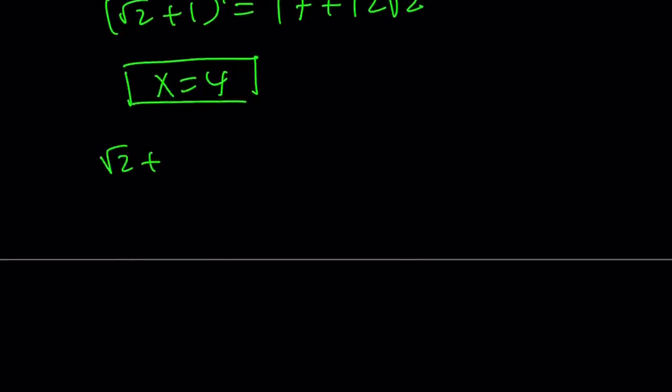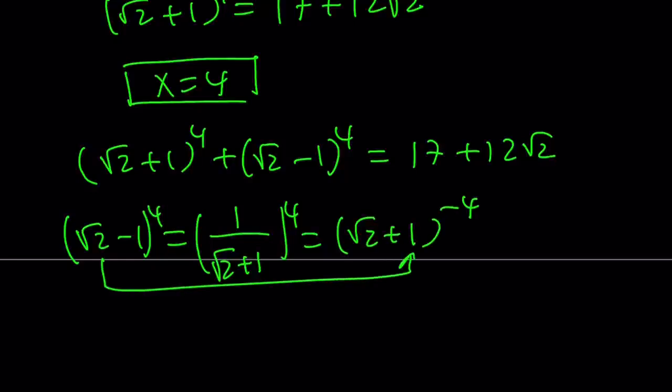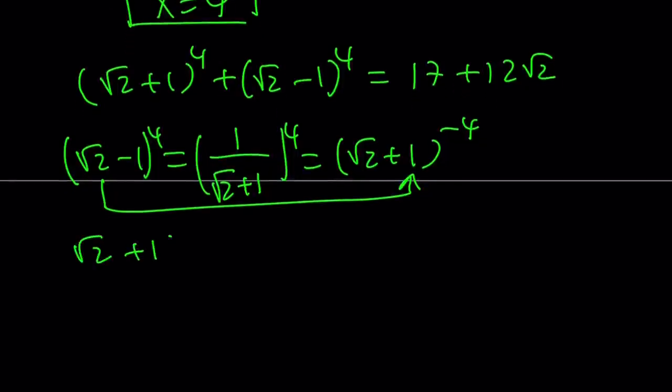And this implies square root of 2 plus 1 to the fourth power plus square root of 2 minus 1 to the fourth power equals 17 plus 12 root 2. But since root 2 plus 1 and root 2 minus 1 are reciprocals, we can go ahead and do the following. Root 2 minus 1 is equal to 1 over square root of 2 plus 1. And now let's go ahead and raise both sides to the fourth power. That gives us root 2 plus 1 to the power of negative 4. So, this equals that, right? When you change the basis, the exponent changes. Easy. And you can basically switch these around and write the same thing for root 2 plus 1 to the fourth power. And that is going to become root 2 minus 1 to the power of negative 4.